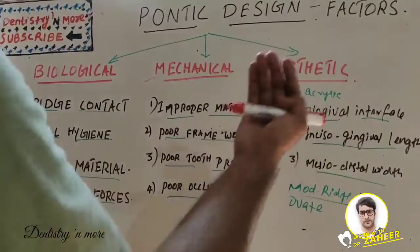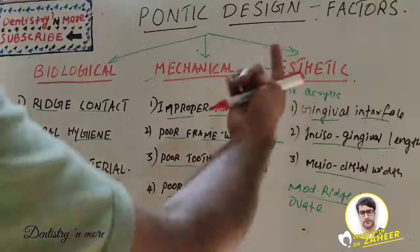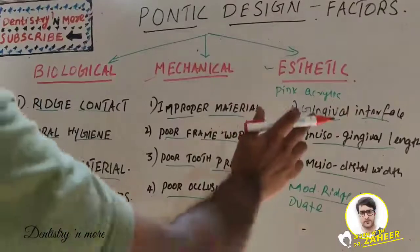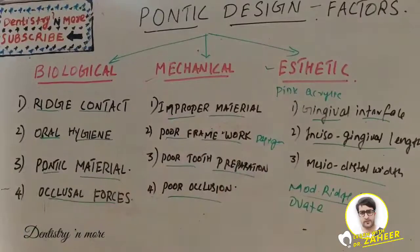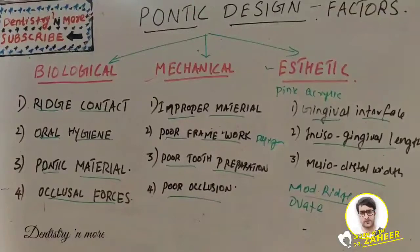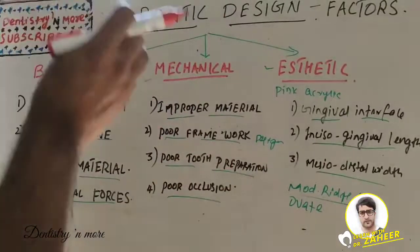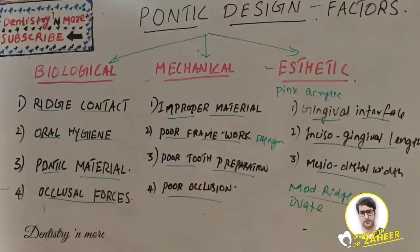Now we have the aesthetic considerations. Aesthetics is a priority for the patient, especially when replacing a tooth in the anterior region. We have three factors in aesthetics: gingival interface, incisal/gingival length, and mesiodistal width. For the gingival interface, an aesthetically successful pontic will replicate the form, contour, incisal edge, gingival and incisal embrasures, and color of the adjacent tooth.